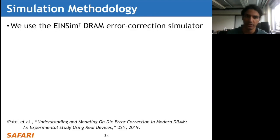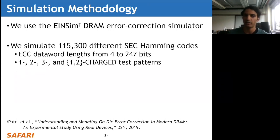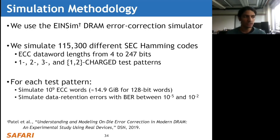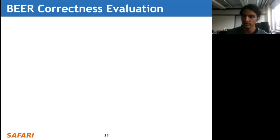We use the INSIM DRAM error correction simulator, following up from some of our previous work, which allows us to simulate data retention errors and different ECC functions. We simulate over 100,000 different single-error-correcting Hamming codes with ECC data word lengths ranging from 4 to 247 bits - the real chips use 128 bits, which falls in the middle. We show results for the 1-charge, 2-charge, 3-charge, and combined 1-and-2-charge test patterns, inducing errors similarly to our experimental analysis with comparable data retention error rates.